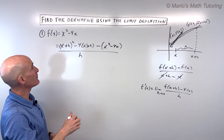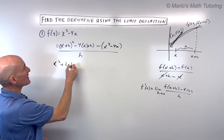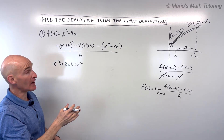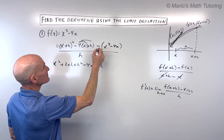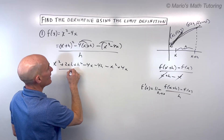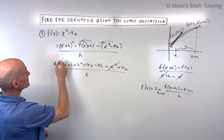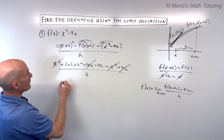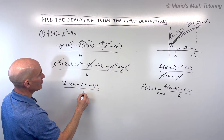Now we're going to do a little arithmetic and simplify. x plus h times x plus h comes out to x squared plus 2xh plus h squared — if you're not sure, you can write this twice and FOIL it out. If I distribute the negative 4, we get negative 4x minus 4h. If I distribute the negative, I get negative x squared plus 4x, all divided by h. Now it looks like there's some cancellation: the x squareds cancel, the 4x's cancel, and we're left with 2xh plus h squared minus 4h, all divided by h.